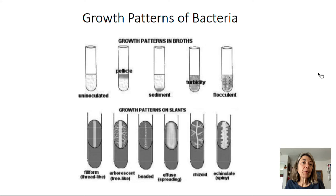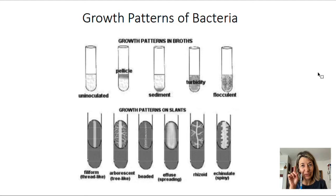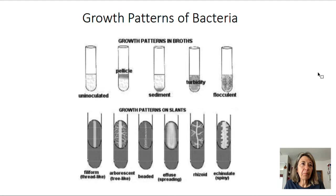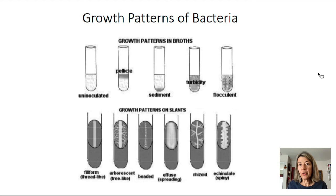On slants, you can observe more complex growth patterns: filiform looks thread-like, arborescent is branching like a tree, beaded shows tiny spots, rhizoid has a root-like appearance, and effuse means bacteria have grown all over the surface. These are the various slant growth patterns you may observe.